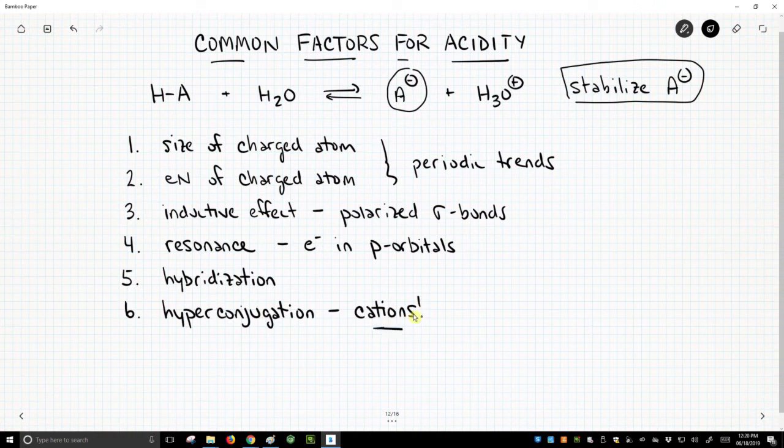But these are the six factors. We will revisit these factors over and over again. And we can use them to explain acidity, why a molecule will lose a proton and form this anionic conjugate base. These factors are great for explaining that.